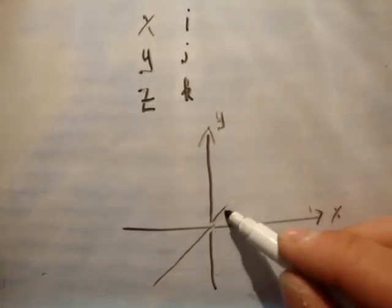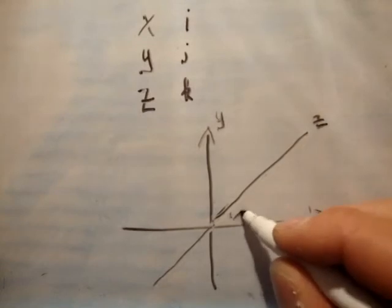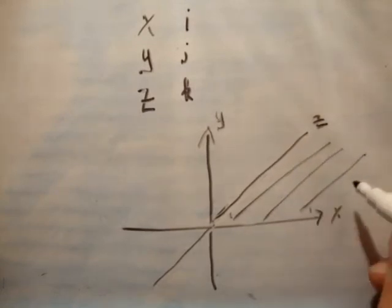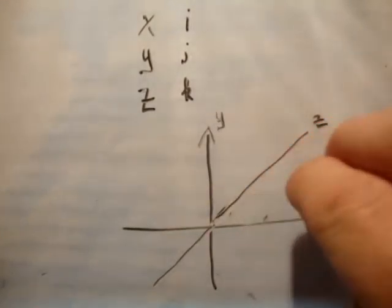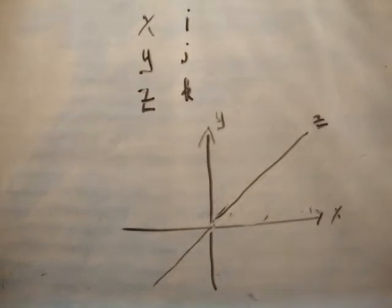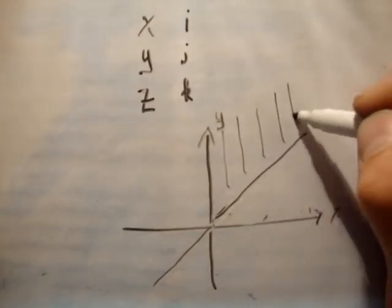But what about the x-z plane? Well, if this is z, the x-z plane is this one here. That's the x-z plane. And similarly, what about the z-y plane? The z-y plane would be here. Like that.